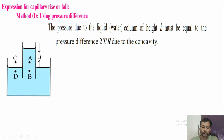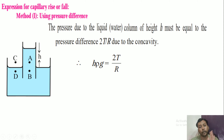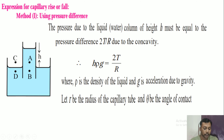Let small r be the radius of the capillary tube and theta be the angle of contact. R is the radius of curvature of the liquid meniscus. The radius of curvature R of the meniscus is given by: capital R is equal to small r upon cos theta. This comes from the right angle triangle relationship, where capital R is the radius of curvature and small r is the radius of the capillary tube.